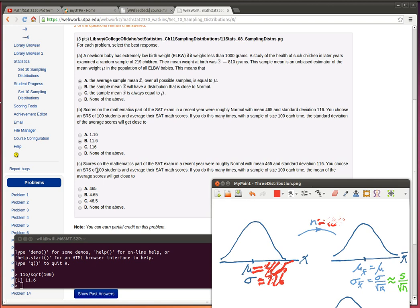You choose a simple random sample of 100 students. If you do this many times with a sample size of 100, okay, so we've got exactly the same setting that we had before. Each time, the mean of the average scores will get close to, well, this mean, the mean of these average scores is going to be close to that 465.